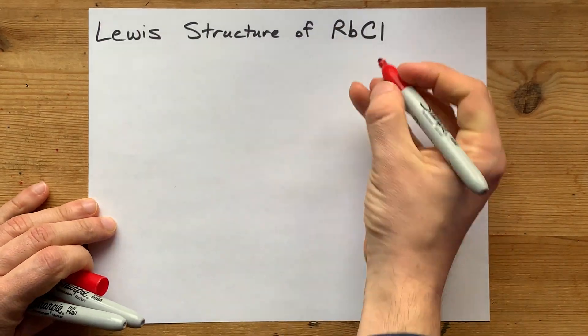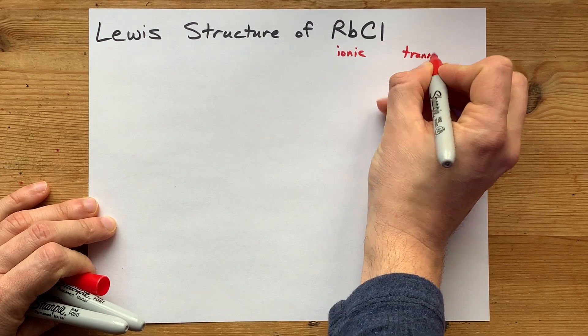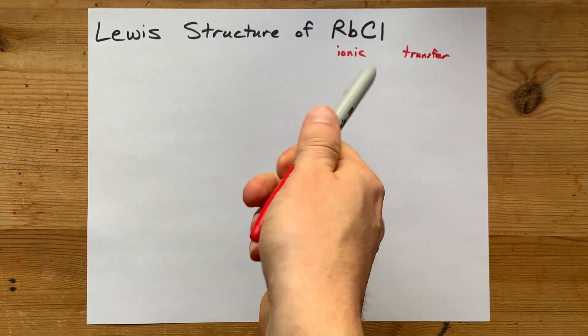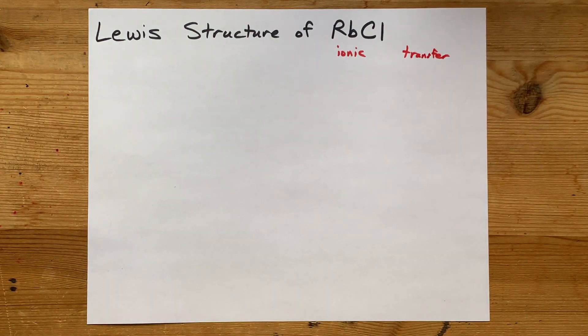When metals and non-metals combine, they form ionic compounds, which occur because they are transferring electrons. And by that, I specifically mean metals give electrons away to non-metals.